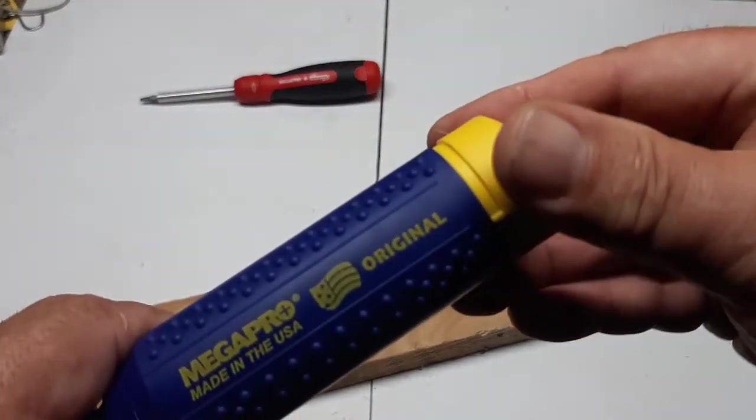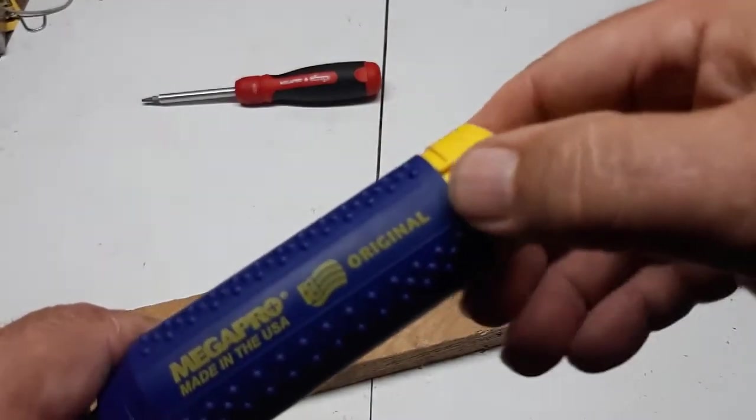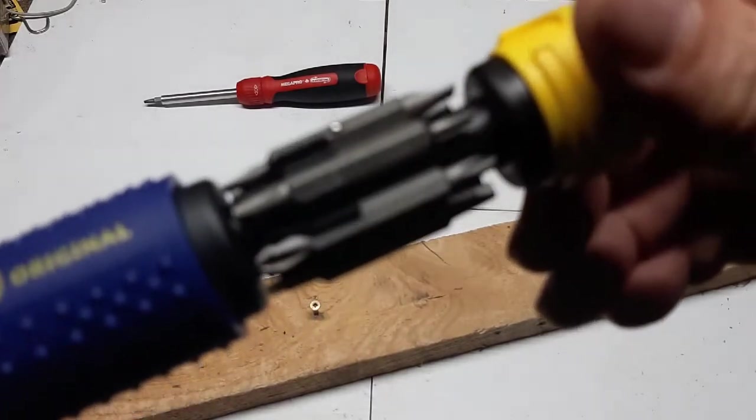There's a little bevel here that can open up. Now we're going to want the Robertson 2.